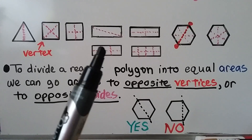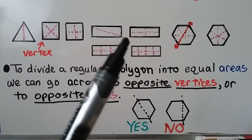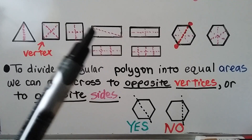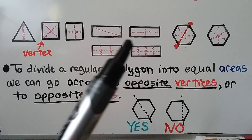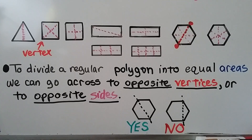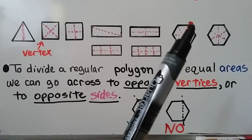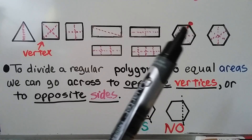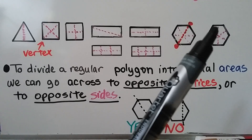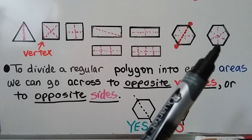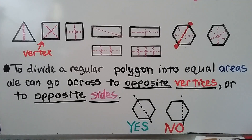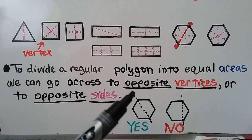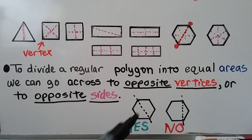For a rectangle, we can cut it into equal areas in many different ways. We can make two equal triangles by cutting on a diagonal — opposite vertices. We can also make four, six, or eight equal areas. For a hexagon, going from each vertex to the opposite vertex makes six triangles, or going across opposite sides makes six equal areas. Be careful when cutting into equal areas — make sure both sides are equal. You wouldn't want one side unequal to the other.